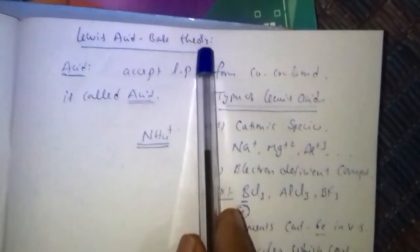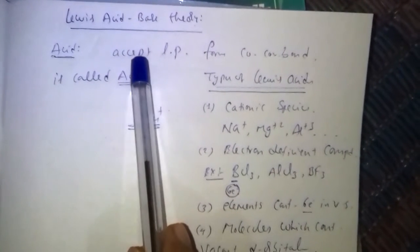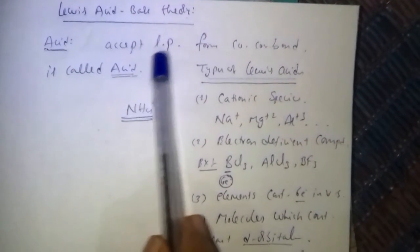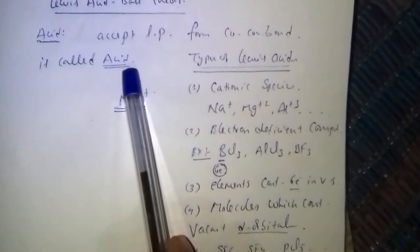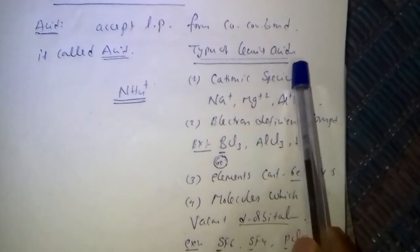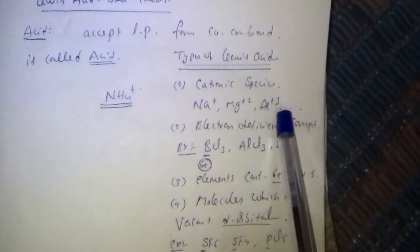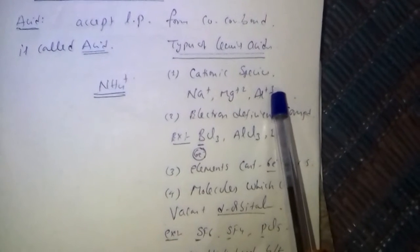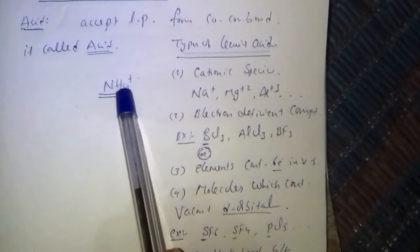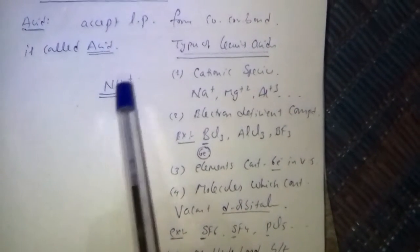Lewis Acid-Base Theory. According to Lewis, the chemical species which accepts a lone pair to form a coordinate covalent bond is called an acid. Almost all cationic species contain positive charge and electron deficiency, so they accept lone pairs and act as Lewis acids. For example, NH4+ has no orbital to accept an electron pair, so it does not act as a Lewis acid.